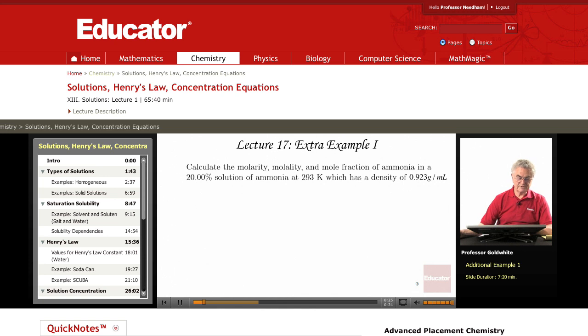This is a 20% solution of ammonia at 293K because that determines the density as 0.923 grams per milliliter. Now a 20% solution means we have 20.00 grams of ammonia and 80.00 grams of water present in 100.00 grams of solution.